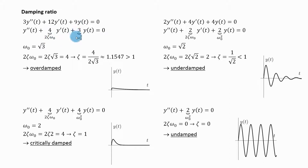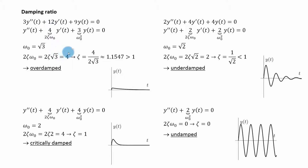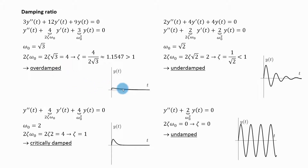From this I can get that my natural frequency is square root of three. Then two zeta omega naught, substituting omega naught as square root of three, gives two zeta times square root of three, which equals four. From here I can get that zeta is four divided by two times square root of three, which is approximately 1.15, greater than one, meaning this system is overdamped. So I can expect its response to be slowly stabilizing.